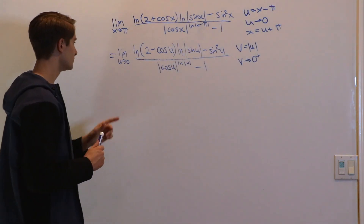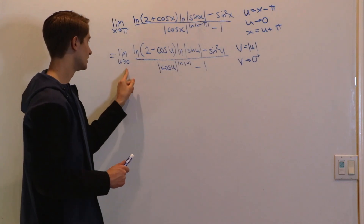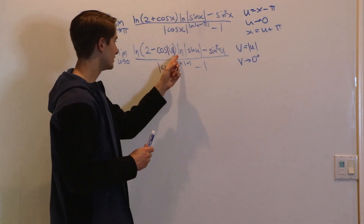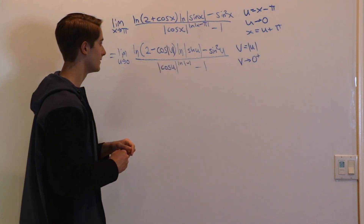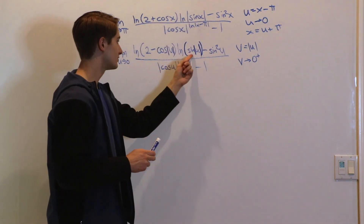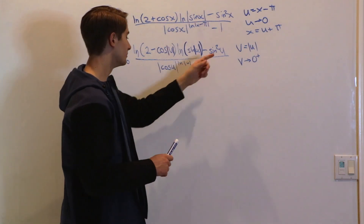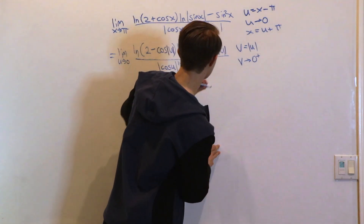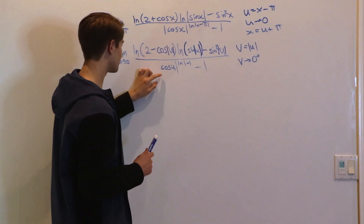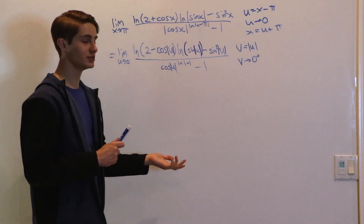First, we have cos u. Because u is approaching 0, cosine around 0 is always positive, and cos(-x) = cos x, so we can write it as cos|u|. We can do the same with sin u since we have an absolute value on the outside: |sin u| = sin|u|. For sin²u, squaring makes it positive so we can put |u| there without changing anything. And once again with cos u in the denominator, the absolute values on the outside don't matter since cosine is always positive near 0, and cos(-x) = cos x.